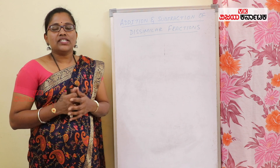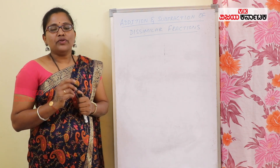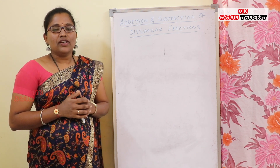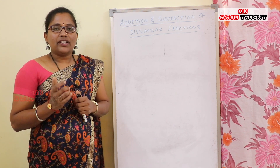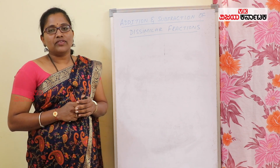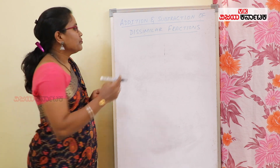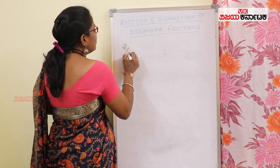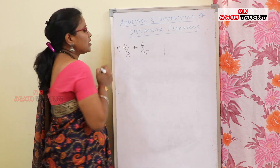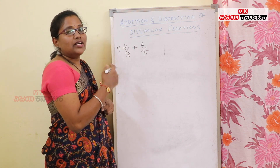In fractions, we will add with the same denominator — plus or minus, we will subtract. The denominator is different in the other fractions. For example, I have 2 by 3 plus 4 by 5. That is the fraction, and these fractions will be added.